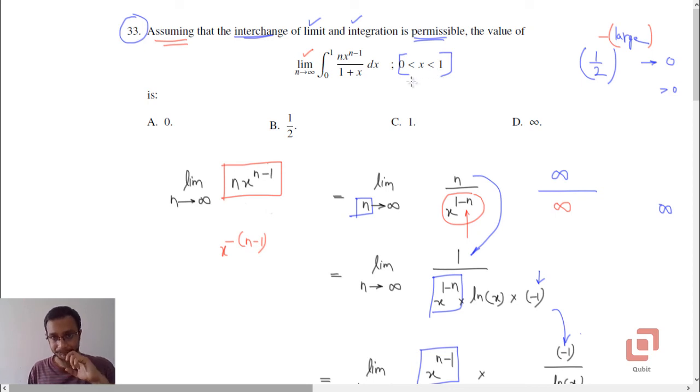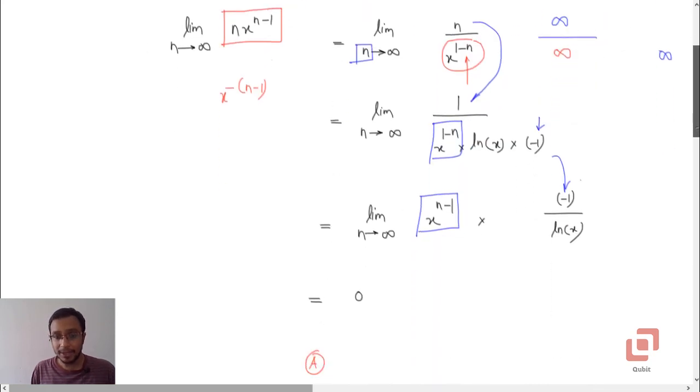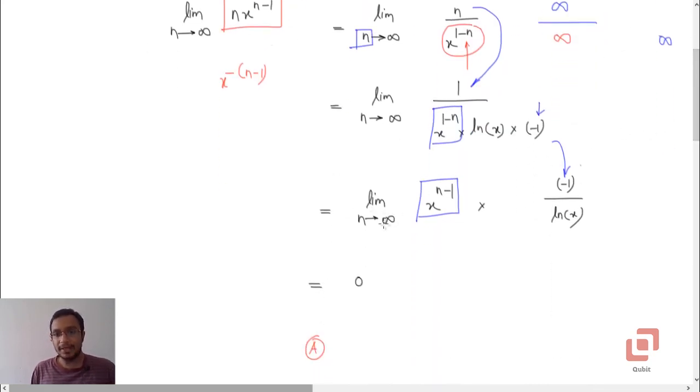Because 1/2 lies between 0 and 1, and this is not only true for 1/2 but for any real number between 0 and 1. Therefore, limit as n tends to infinity x raised to n minus 1 is 0 only because x lies between 0 and 1. So the limit is 0, and because the limit is 0, that means the whole integral is 0 provided we first take the limit. So clearly the answer is 0.